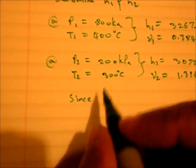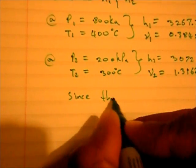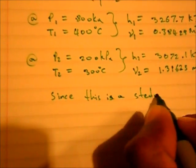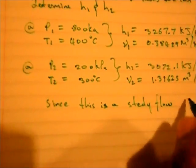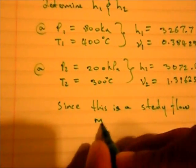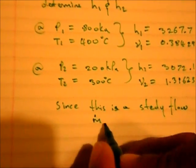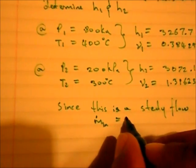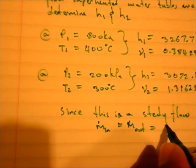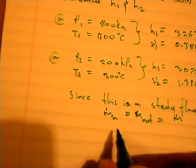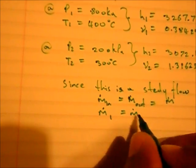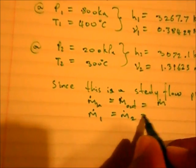Since this is a steady flow process, you can say then from your notes that m dot in is equal to m dot out, which is equal to m dot. Therefore, m dot 1 is equal to m dot 2, which is equal to m dot.